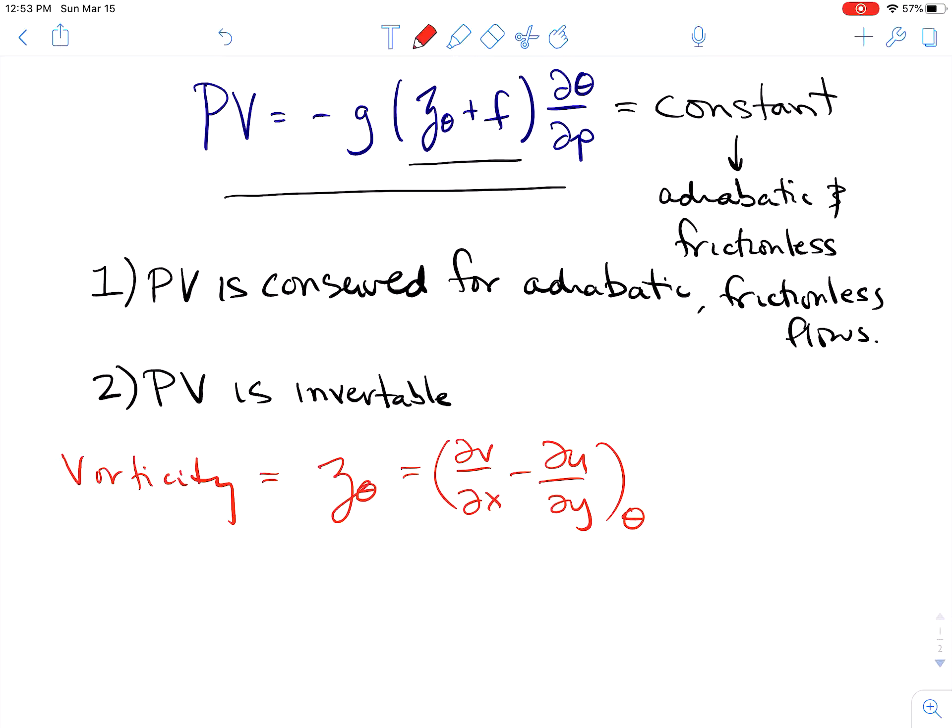In addition, static stability is our minus 1 over g d theta dp. Well, d theta dp here, we could then get information about, for example, geopotential height. From this information, we could get information about the ageostrophic nature of the wind. So between our vorticity and our static stability, we really have all of the information we need about the atmosphere described in this single quantity.